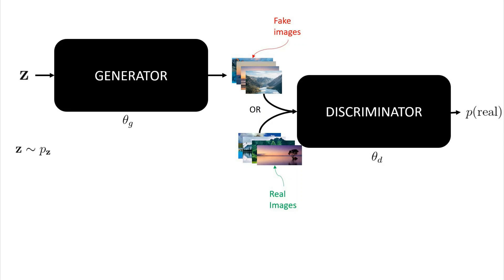However, as we train for longer, the generator's parameters, theta G, will keep updating, such that the generator begins to do better at fooling the discriminator. In this manner, we will eventually be generating more and more realistic landscape images.